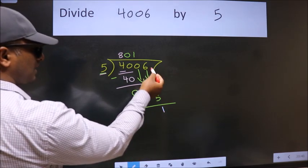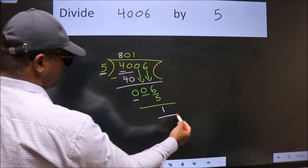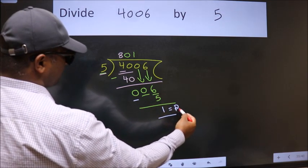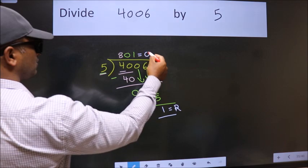No more numbers to bring down, so we stop here. This is our remainder. This is our quotient.